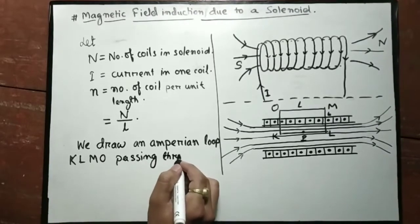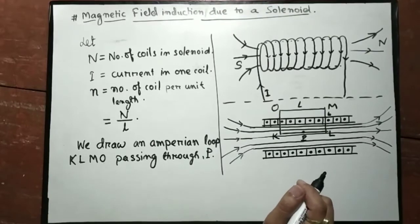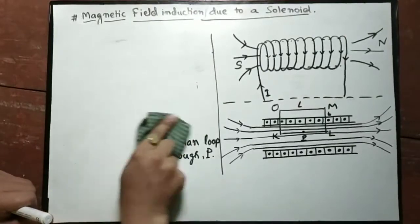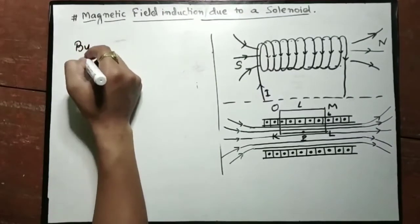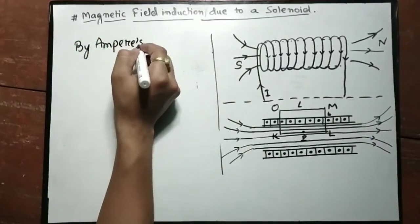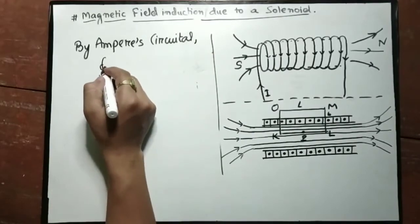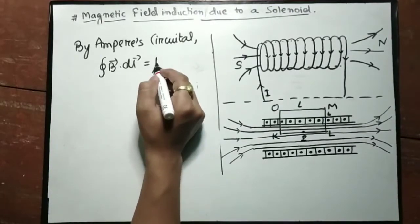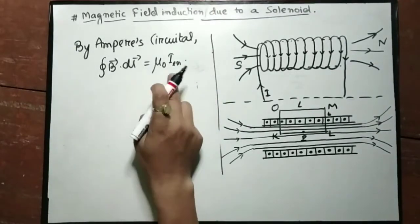Considering point P and the rectangular Ampere loop, we apply Ampere's circuit law. The closed line integral of magnetic field induction is equal to mu-naught times the total current enclosed by the Ampere loop: ∮B·dl = μ₀ × I_enclosed.